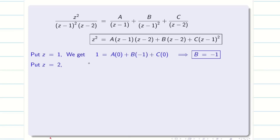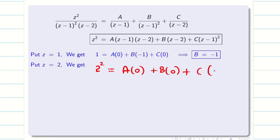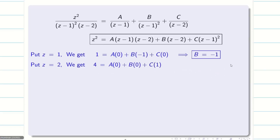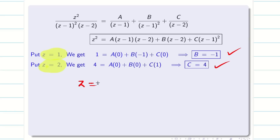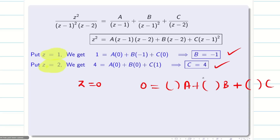Similarly, when we put Z equal to 2, we get 2 square equals A times 0 plus B times 0 plus C times (2 minus 1) whole square. So C equals 4. Now I can only find B and C by substitution. I do not have a third suitable value, so I will compare coefficients.